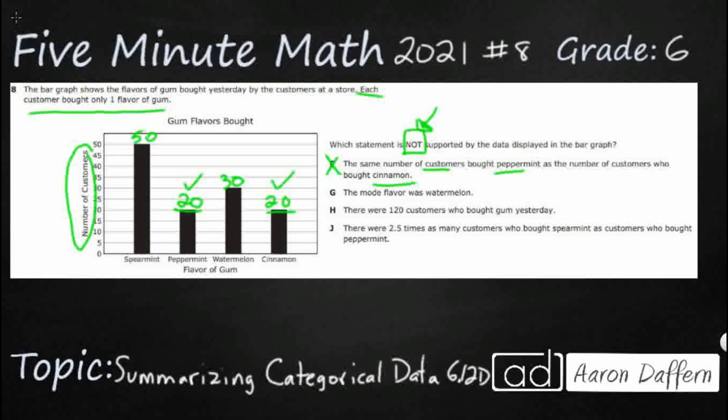G, the mode flavor is watermelon. Now this might seem a little bit strange because we don't really talk about the mode flavor. And typically when we see the mode, it's just pure numbers. It's not in a bar graph. But remember our mode is going to be the most popular. It's going to be the highest number, the one that's chosen the most.